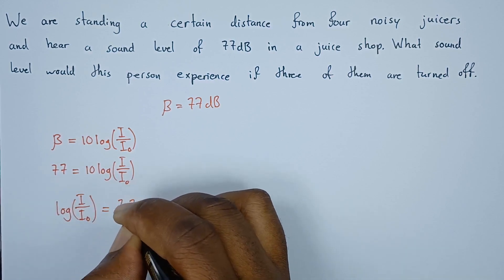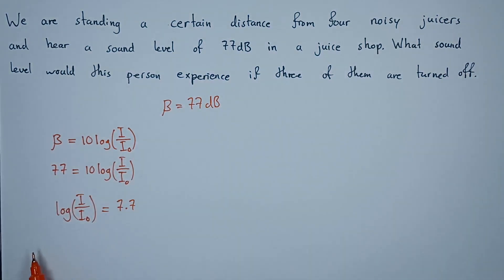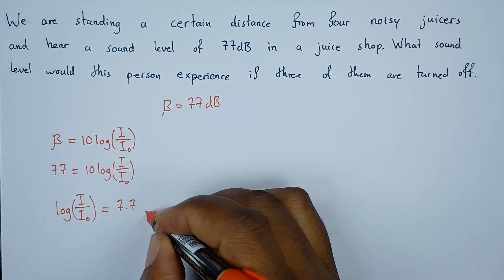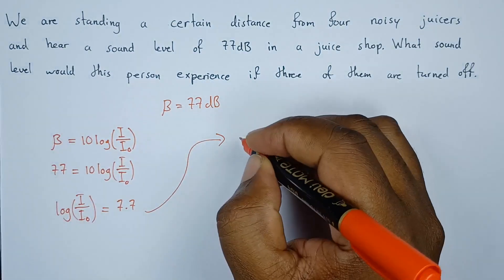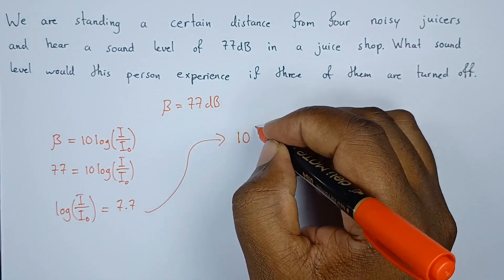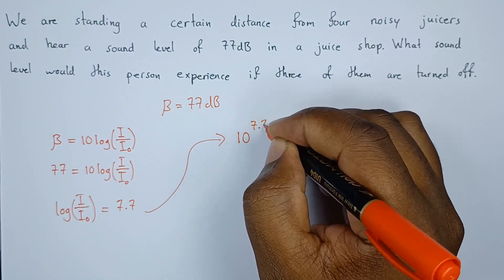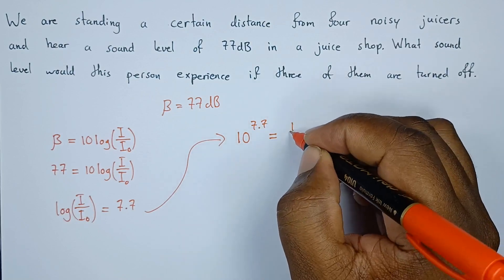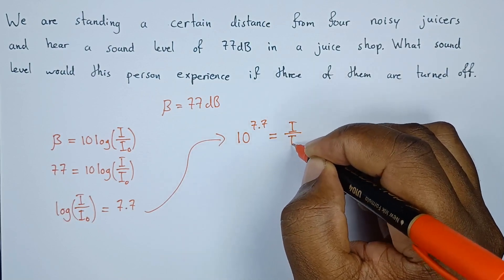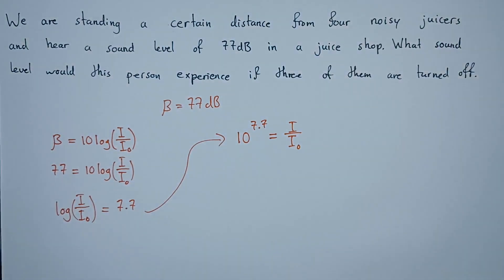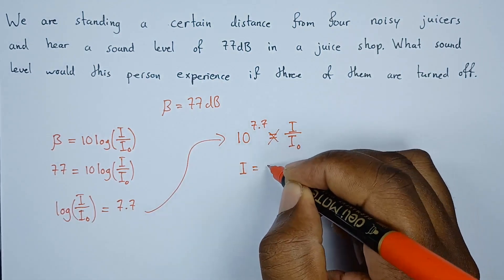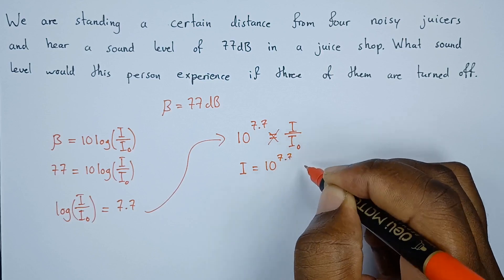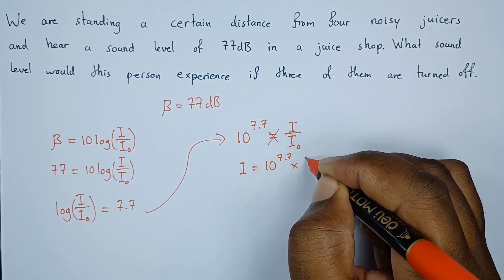Now we have to change this expression from logarithmic form to exponential form. The base here is 10, so this will be 10 to the power 7.7 equals I over I naught. Since we're looking for intensity, we cross multiply, hence intensity equals 10 to the power 7.7 multiplied by I naught.